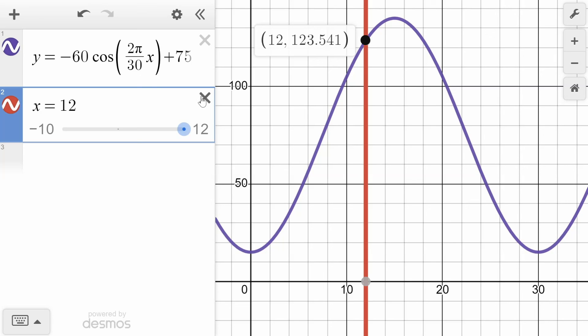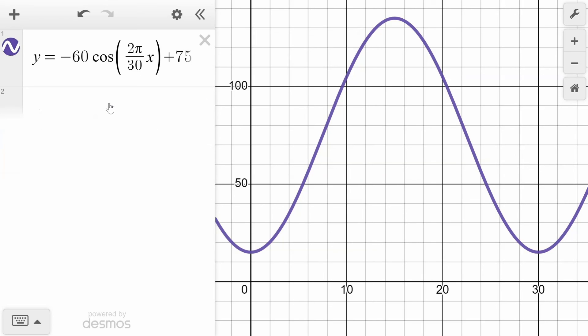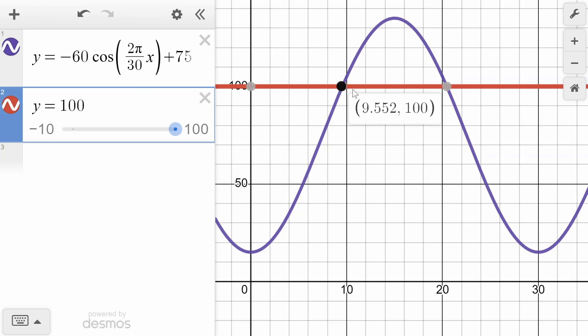And if we want to do the second part, which is find the times that go with a height of 100 meters, we can just put in the height as 100, or in other words, in this case, we're using y. So y is 100. It draws a horizontal line at 100, and we can click on our two times. We had 9.55 and 20.45 there, those two values.